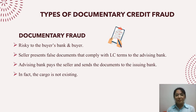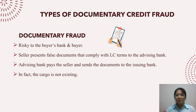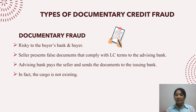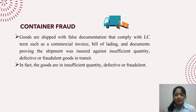There are three types of Documentary Credit Fraud. The first is Documentary Fraud, which is quite risky to the buyer's bank and buyer. The seller presents fraudulent documents that comply with the Documentary Credit terms to the advising bank. The advising bank checks the documents and, if found in order, pays the seller. Then the advising bank forwards the documents to the issuing bank, and the issuing bank pays the advising bank on behalf of the buyer. But in fact, the cargo does not exist.